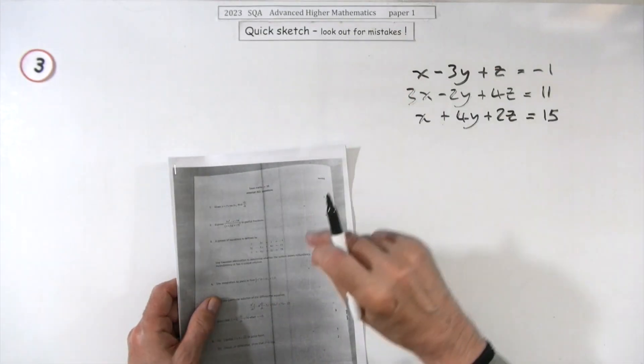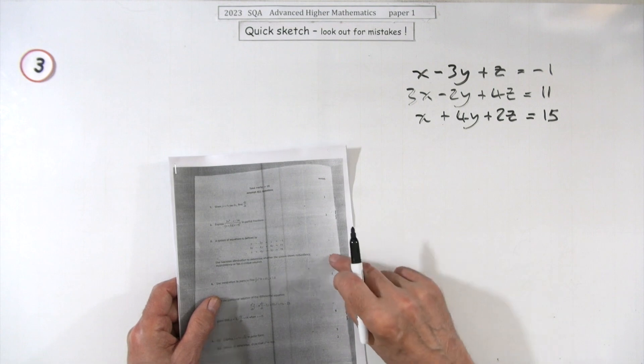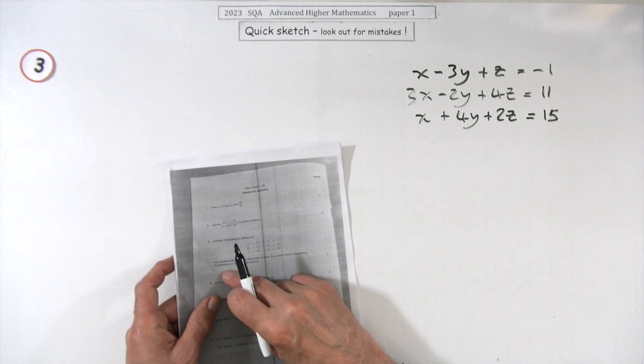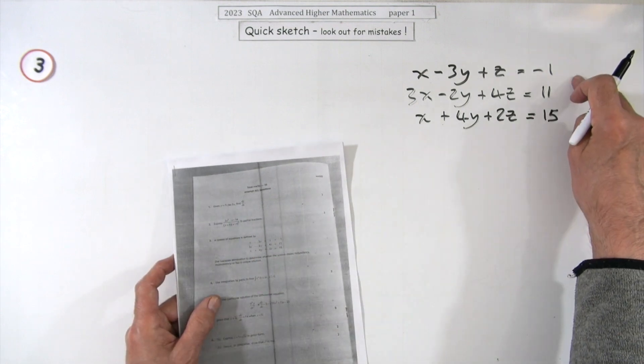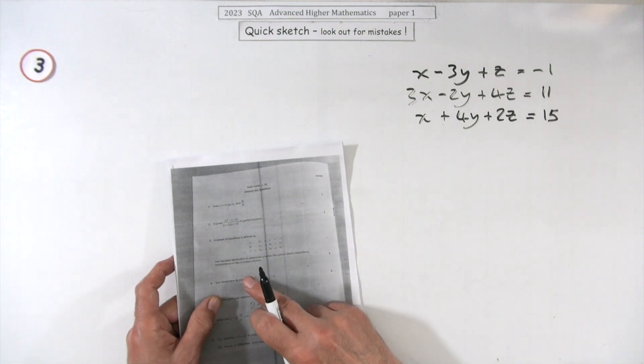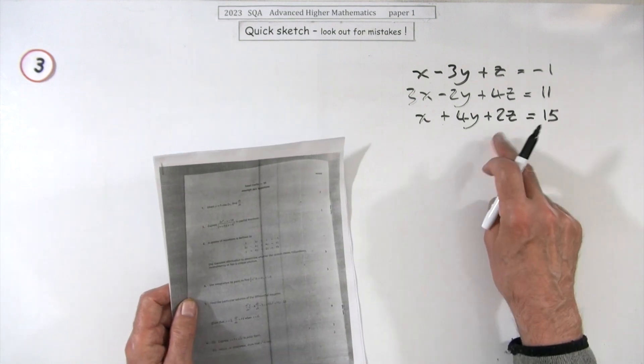Number three from paper one of the 2023 advanced math exam: a three-mark question on Gaussian elimination. You have a system of equations—three equations and three variables. You have to use Gaussian elimination to determine whether this system